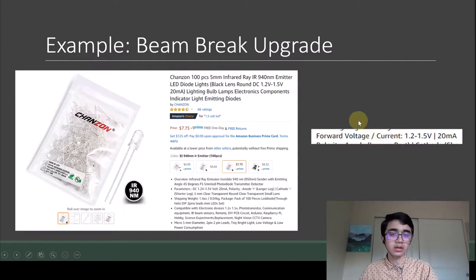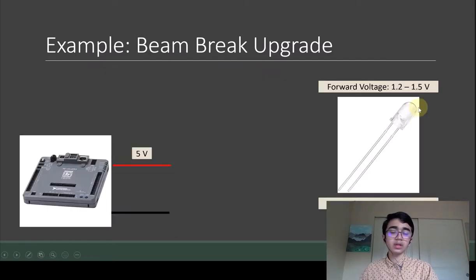If I look down at the specs of the LED, it has a forward voltage of 1.2 to 1.5 volts, a current of 20 milliamps, and I'll explain what that is. This is just an IR transmitter. Say we want to wire this transmitter.